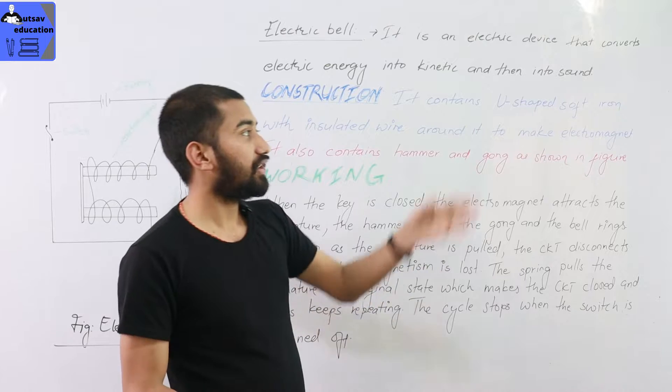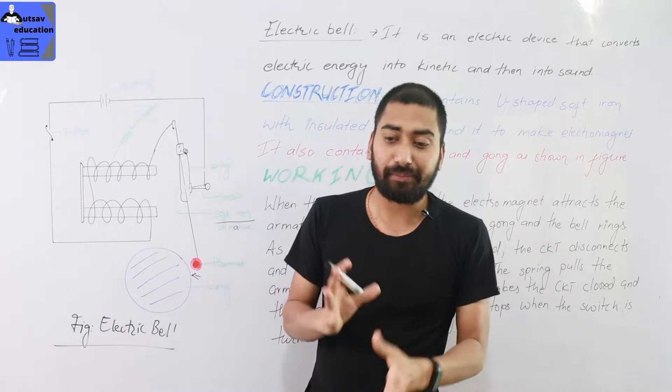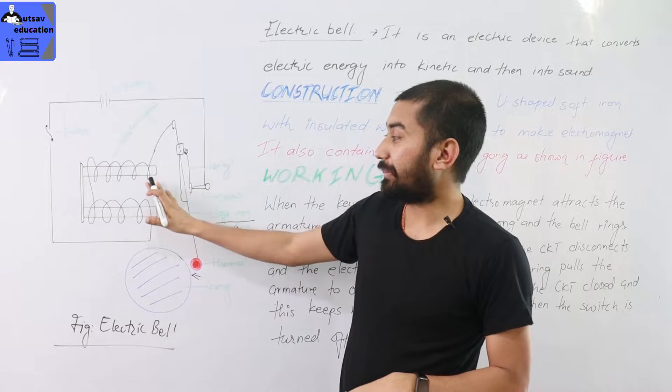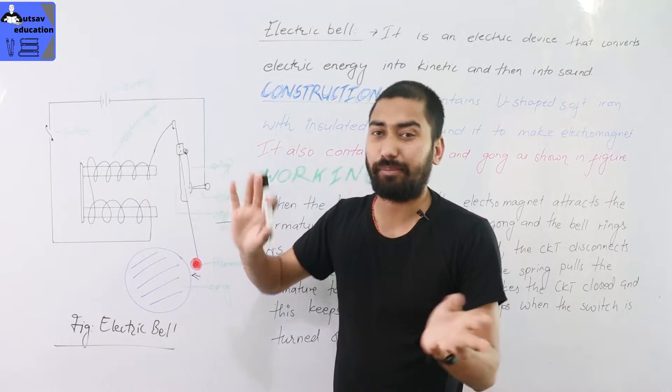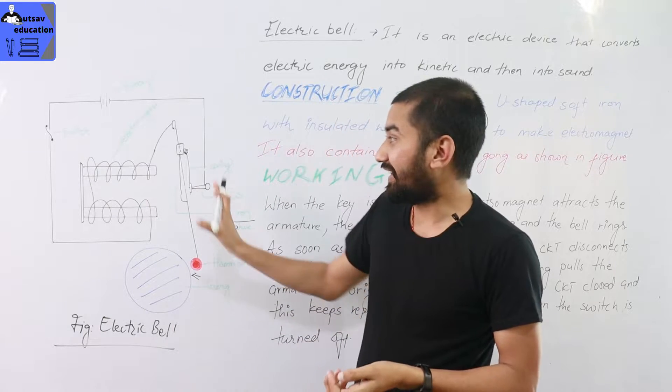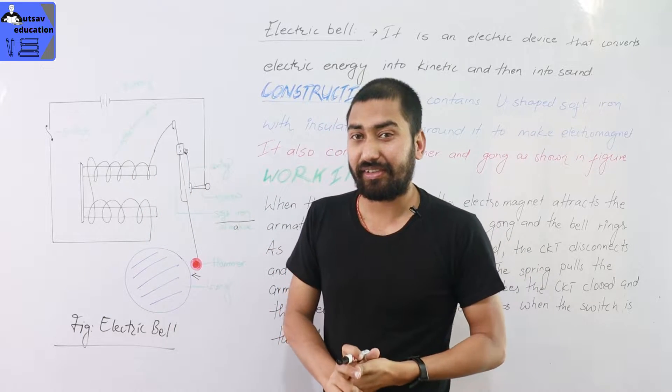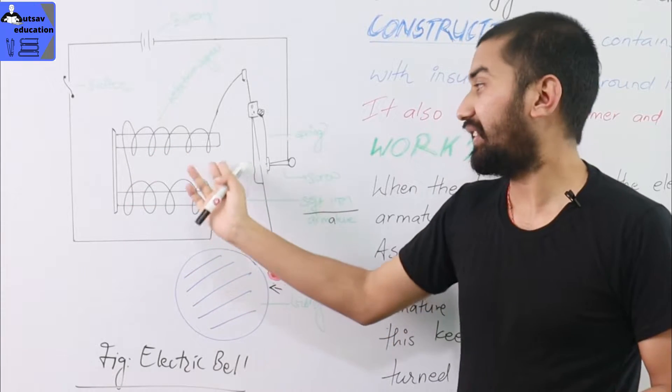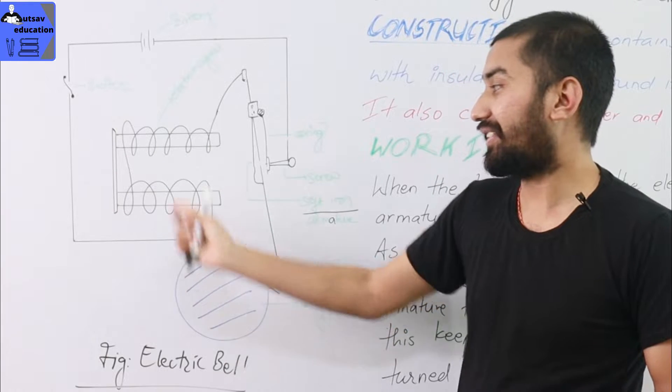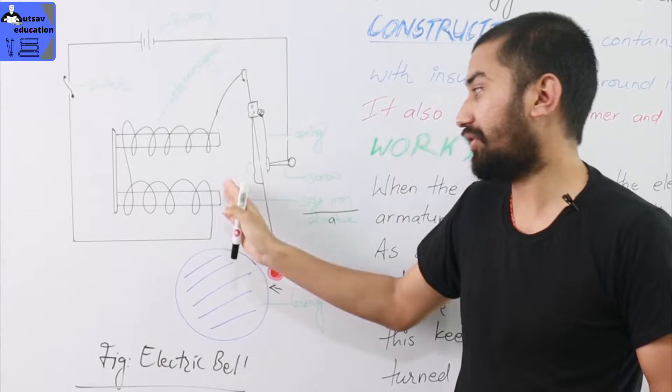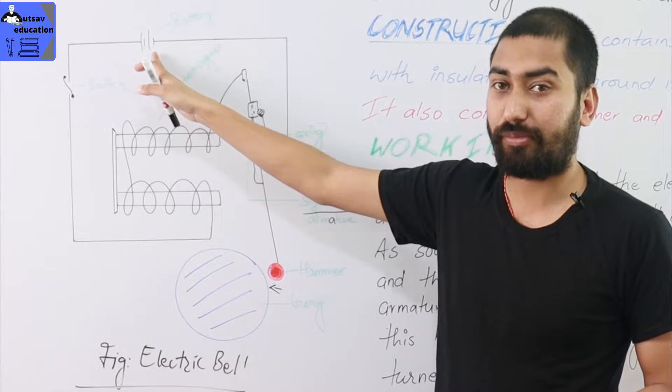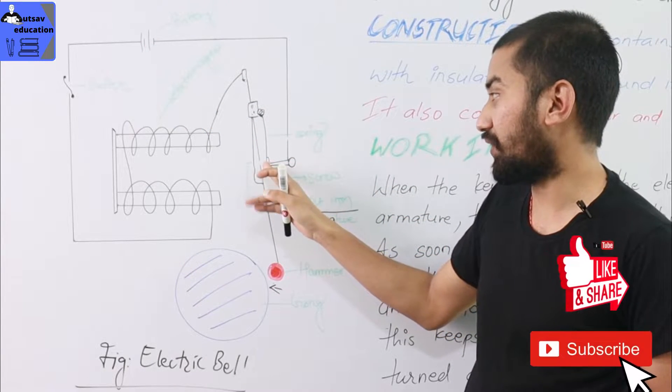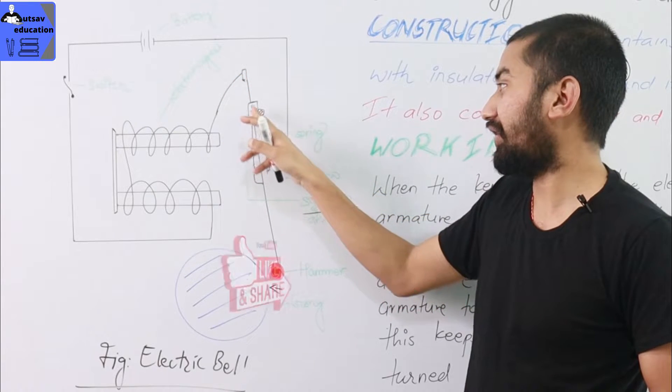Now, the main thing is that the working of the electric bell can be explained. It means that it is a block diagram. It is also a schematic diagram. Generally, this diagram is very simple. It is a simple power block. Then the power unit gets connected.